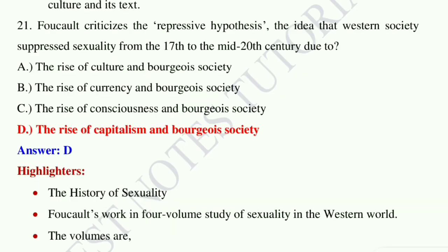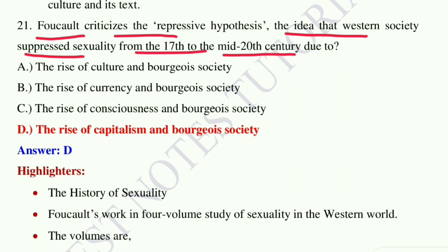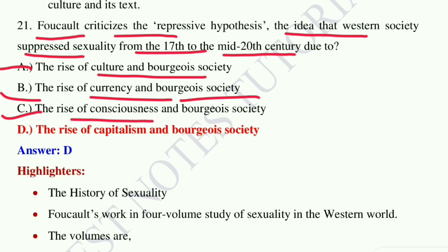Question number 21: Foucault criticizes the repressive hypothesis — the idea that western society suppressed sexuality from the 17th to the mid-20th century — due to: Option A: the rise of culture and bourgeois society. Option B: the rise of currency and bourgeois society. Option C: the rise of consciousness and bourgeois society. Option D: the rise of capitalism and bourgeois society. The correct answer is option D — the rise of capitalism and bourgeois society.